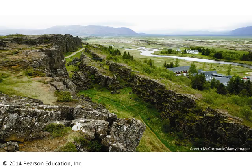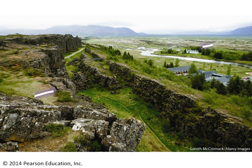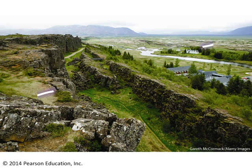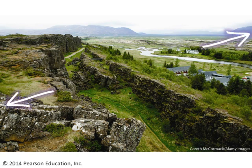That's the site of the photograph we just looked at. What's going on here is essentially stretching of the crust — on one side, the North American plate pulling off towards the west, and on the other side, the Eurasian plate pulling off towards the east. These big blocks of crust break off from their neighbors and slide down into the valley.